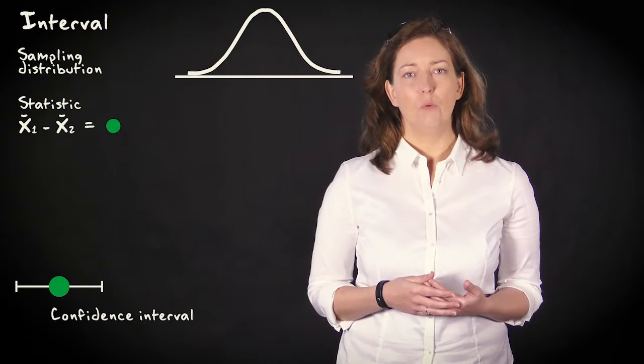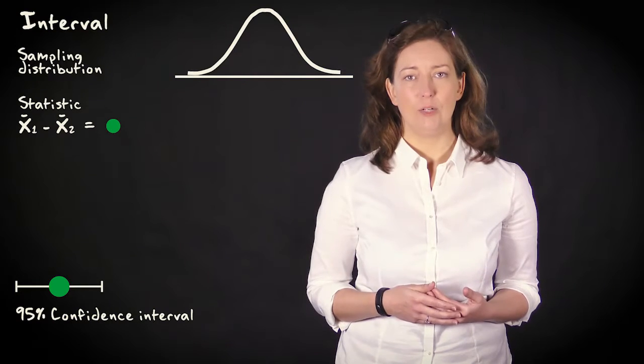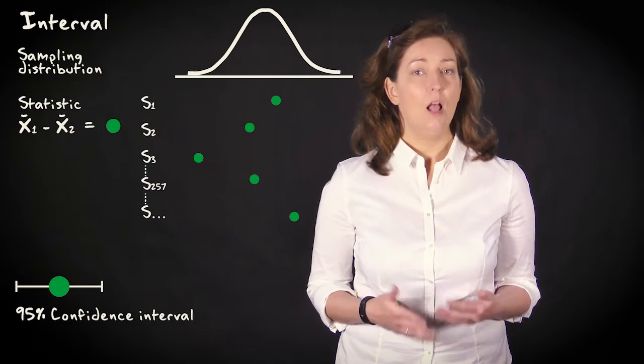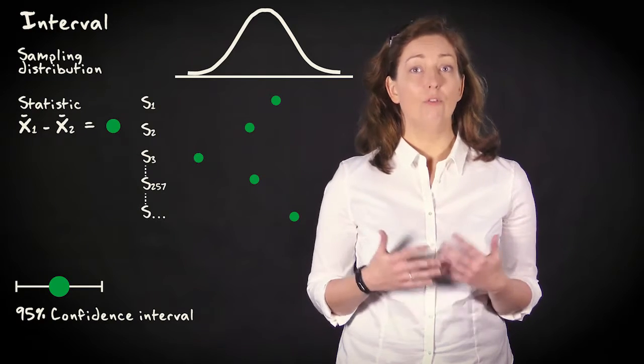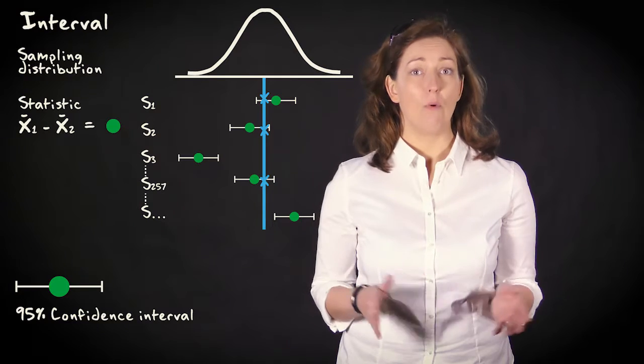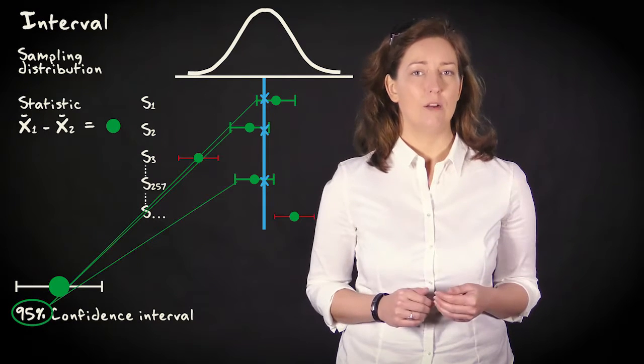A confidence interval with a 95% confidence level answers the following question. If I were to repeatedly draw a sample and calculate a statistic, then what is the range of values around the statistic if I want the true population parameter to lie within this interval in 95% of my samples.